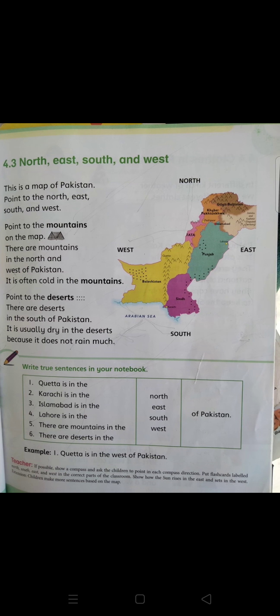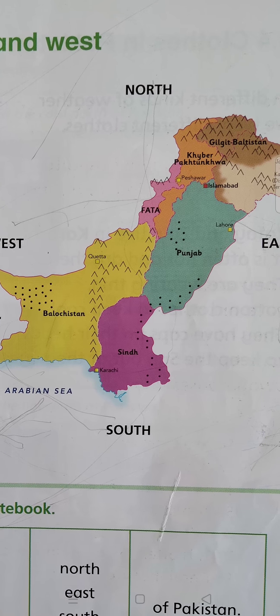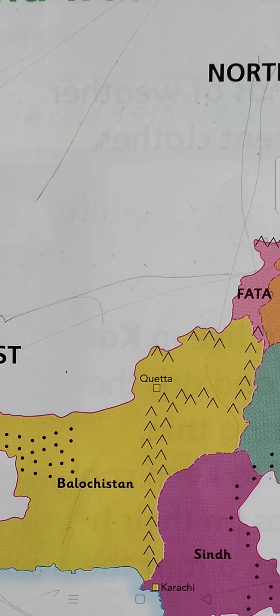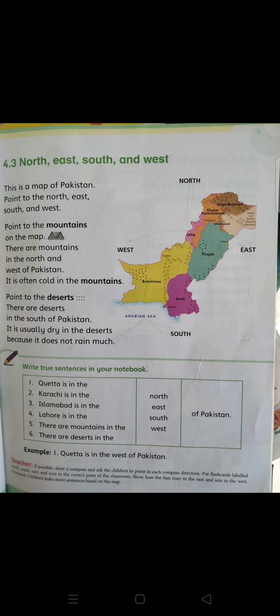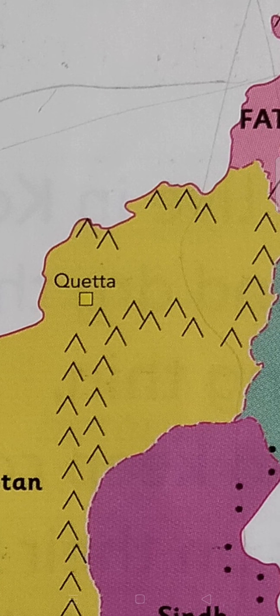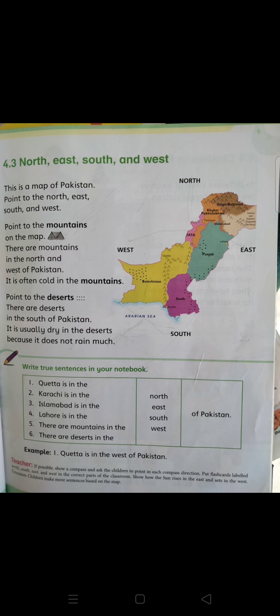The next topic is 4.3 — North, East, South, and West. This is a map of Pakistan. You have to point to the north, east, south, and west. There are mountains in the north and west of Pakistan, and it is often cold in the mountains.